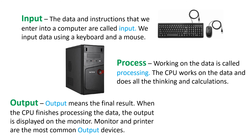When the CPU finishes the thinking and calculation work on the data, the output is displayed on the monitor. The monitor and printer are the most common output devices. When you give a print command, you get a printout from the printer, which is also an output. Additionally, the speaker of a computer gives out sound and music, so a speaker is also an output device.